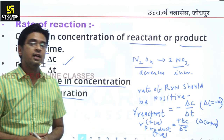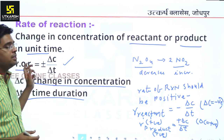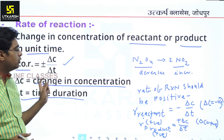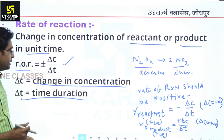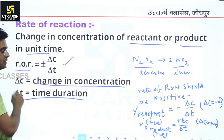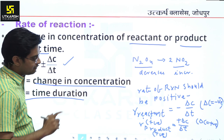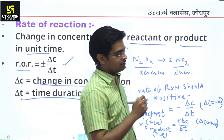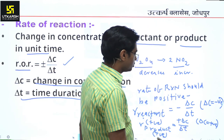Rate of reaction is the change in concentration per unit time. We represent it using ±ΔC/ΔT — minus sign for reactant, plus sign for product. Now we are moving towards the types of rate of reaction.